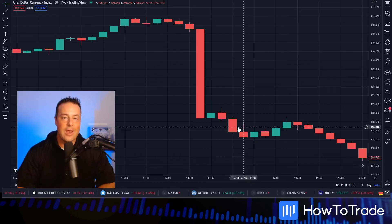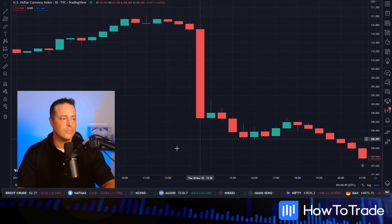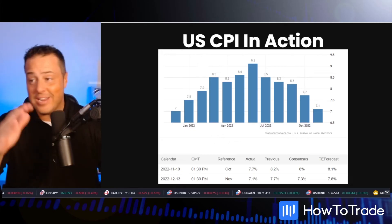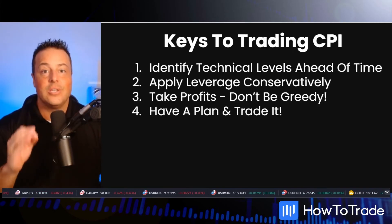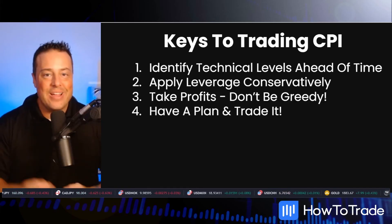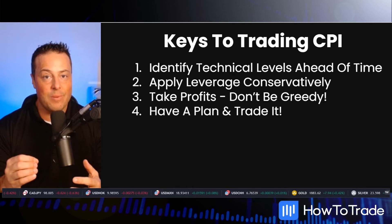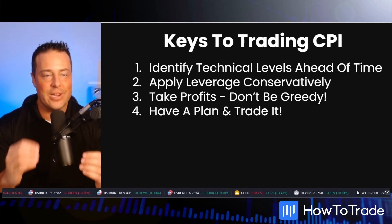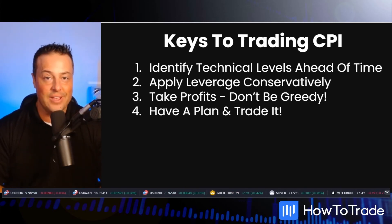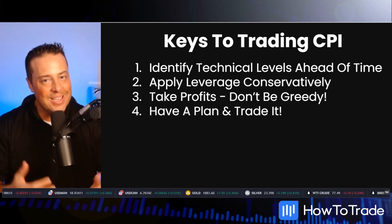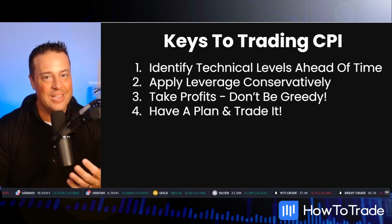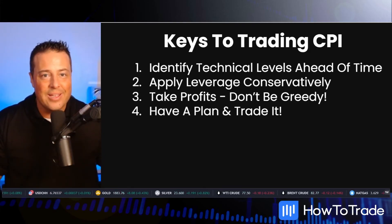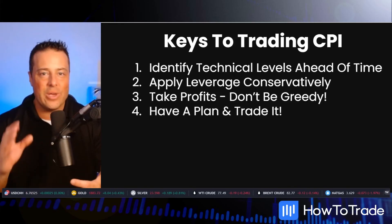So now let's look at a few keys on how to trade CPI successfully. No matter if CPI is at all-time highs or if it's on a downward trajectory, there are a few things that we need to do to trade it effectively. Number one, we have to identify our technical levels ahead of time. Understand that when that CPI number drops, price action is going to be violent, it's going to be unpredictable, it's going to be all over the charts. Have your technical levels ready to go ahead of time. Number two, apply leverage conservatively. Remember, the volatility can be big — there's really no limit on how far markets can move on a CPI release. If you have a large position, you can get stopped out of a winning trade just because you don't have the margin money to cover the swing. Be careful with your leverage.